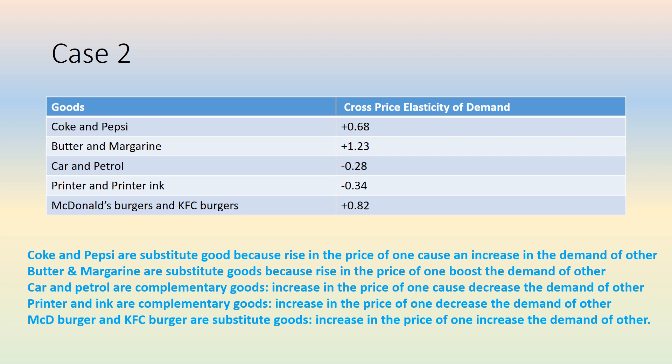The first example is Coke and Pepsi. If the price of Coke goes up, what happens to demand for Pepsi? See the right side: +0.68. This means demand for Pepsi went up also. Why? If the price of Coke goes up, people will consume Pepsi rather than buy an expensive thing.